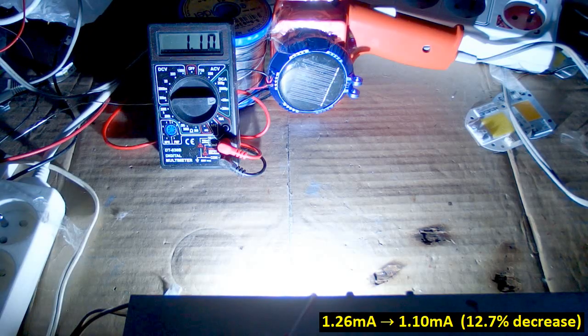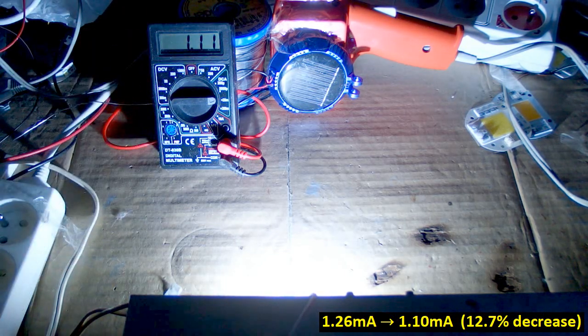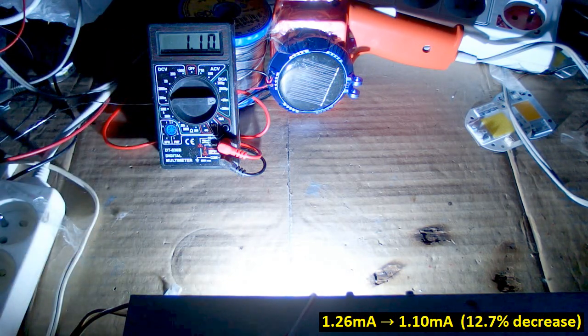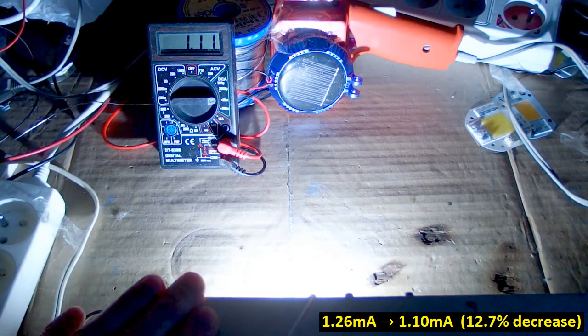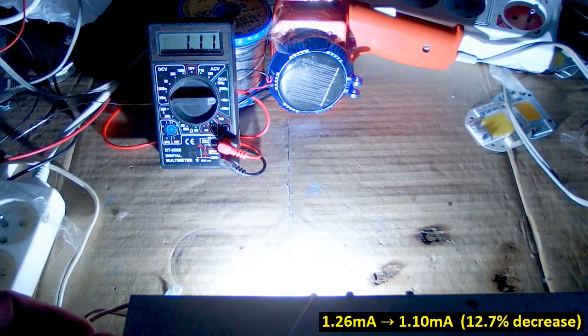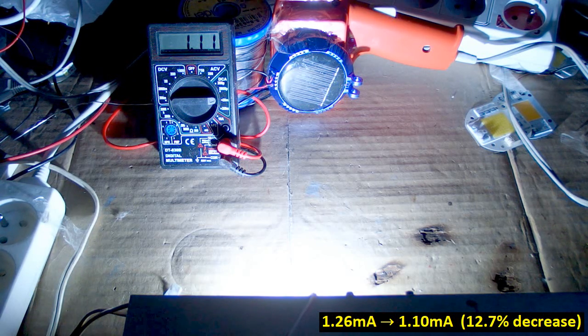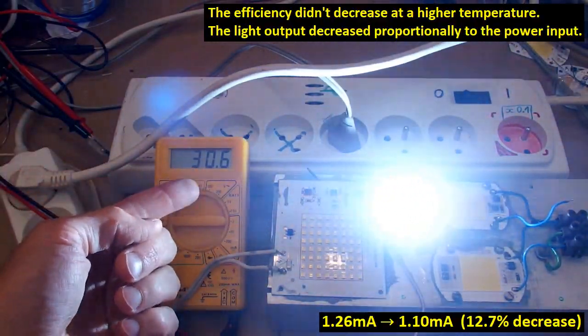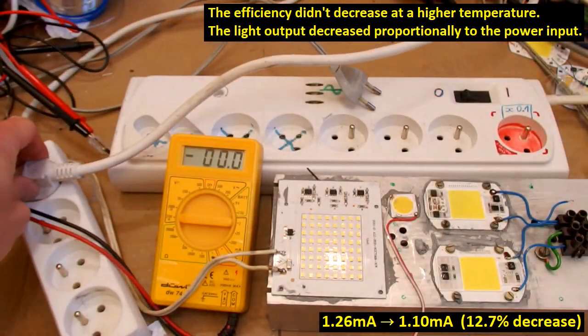After about 2 hours still no explosion and the light output went down by about 15% from 1.26 to 1.10 milliamps. And the heatsink is quite warm but still not too hot to touch. The light output went down but I have a feeling that the power also went down. It probably reduces the power as the temperature goes up. And after it heated up the power is 30.6 watts only. So the power goes down with the temperature.